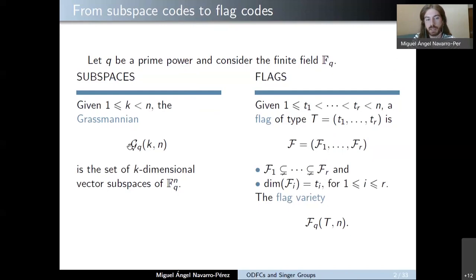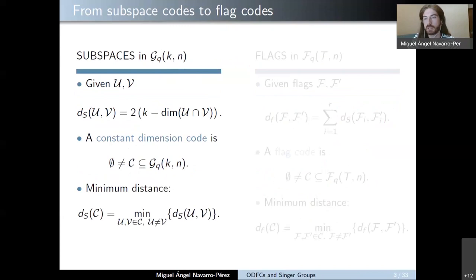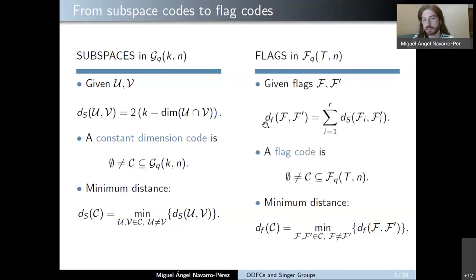These two varieties — the Grassmannian and the flag variety — can be seen as metric spaces using respective distances. In the case of subspaces of dimension K of FQ to the n, their subspace distance is given by this expression, and a constant dimension code in this Grassmannian is a collection of subspaces of the same dimension K. The minimum distance of a constant dimension code is the minimum of the distances between different subspaces in the code. When working with flags, we have another distance — the flag distance — computed as a sum of subspace distances. A flag code is a collection of flags of the given type vector, and its minimum distance is the minimum of the flag distances between different codewords.